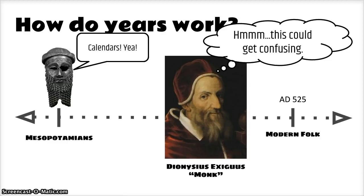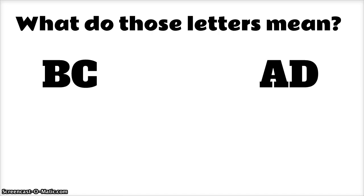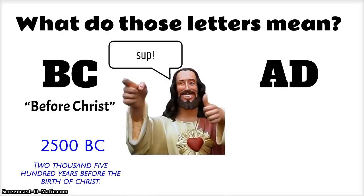Dionysius invented the system that has school children across the globe confused about what AD and BC stand for. So what do these letters mean? BC stands for Before Christ. The term BC denotes before the start of the era. For example, when you read 2500 BC out loud, it sounds like this: 2500 years before the birth of Christ.